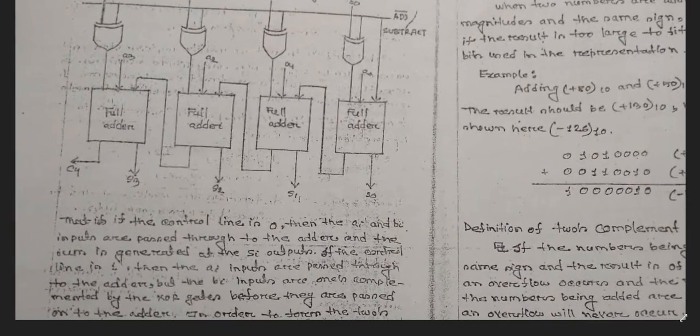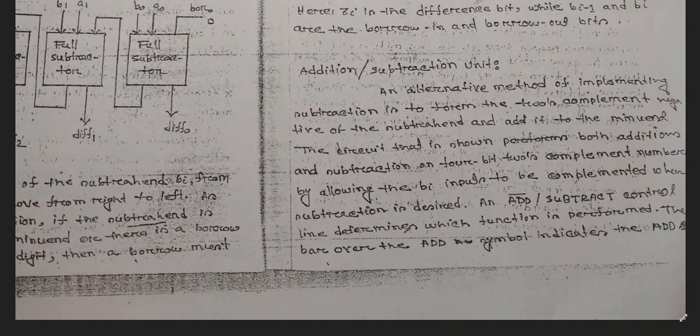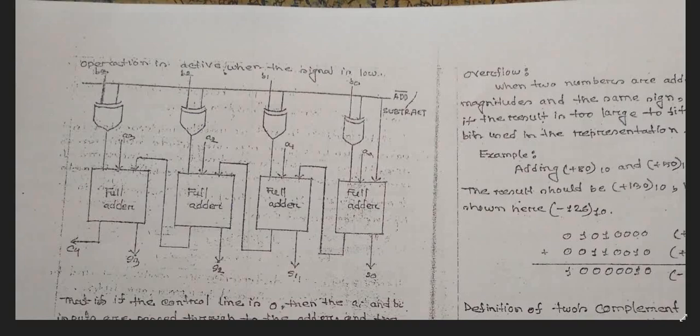Addition Subtraction Unit: an architecture method of implementing subtraction is to form the two's complement of the negative subtraction and addition. In this section we are getting the inputs from the previous adder, similar to the Ripple Carry Adder. But in this section we have a general input where the same input is taken for all full adders.